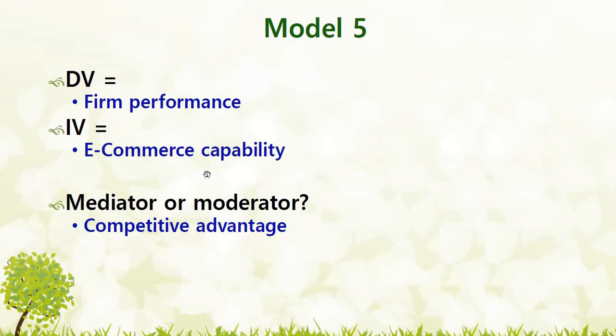Let me give you another example. Here, firm performance is the DV, e-commerce capability is the IV, and competitive advantage is the variable for which we have to find out whether it is a mediator or a moderator. Competitive advantage definitely affects performance, and capability also affects competitive advantage. So in both cases a causal relationship exists. Thus we conclude that it would also act as a mediator.